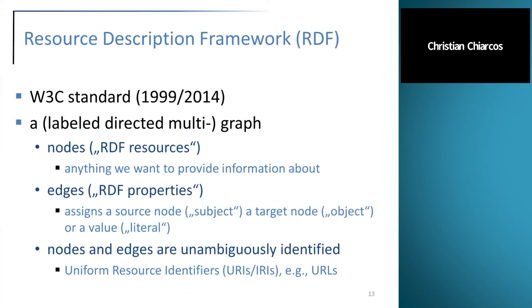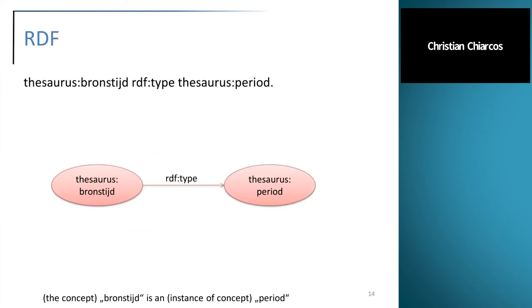RDF formalizes labeled directed multigraphs as its core data structure. We speak about nodes — in RDF these are called RDF resources — and a node is basically anything we want to provide information about. We speak about edges, or in RDF, RDF properties, which are used to assign a subject either another node (an object) or a value (a literal). Nodes and edges are unambiguously identified by Uniform Resource Identifiers, which can for example be HTTP URLs as you know them from your browser.